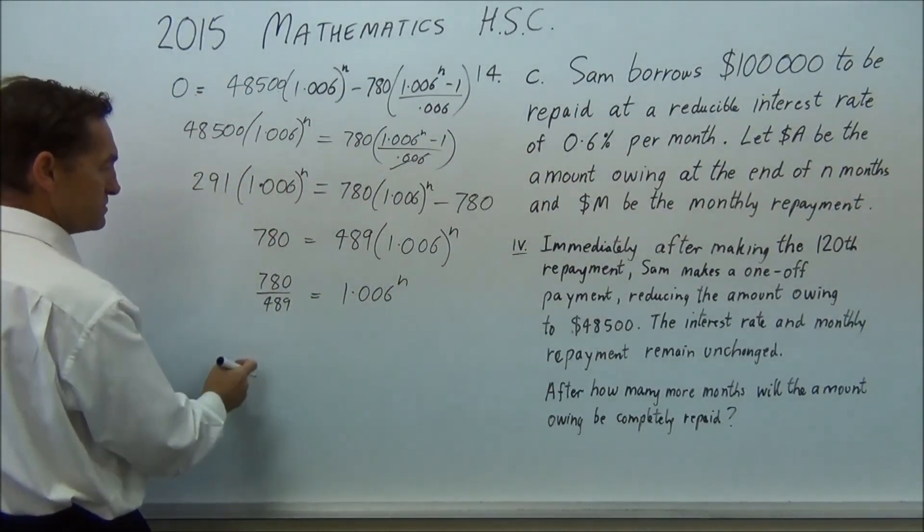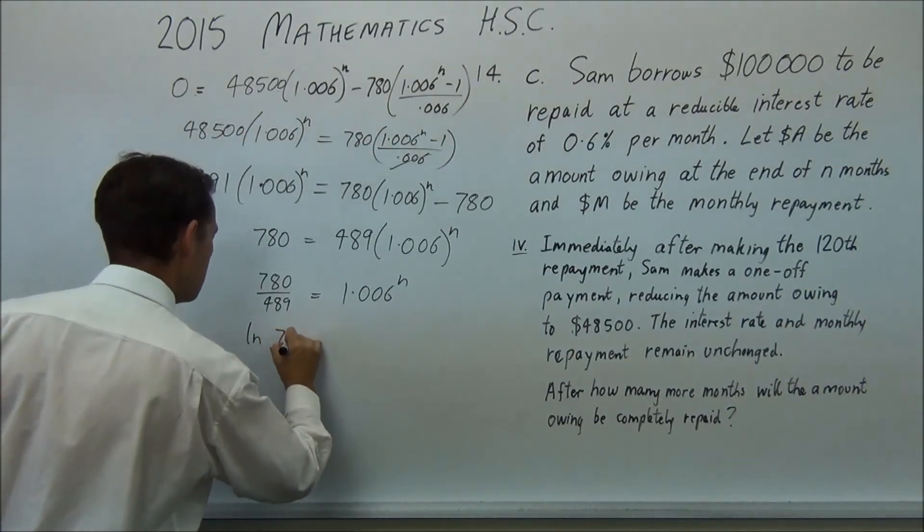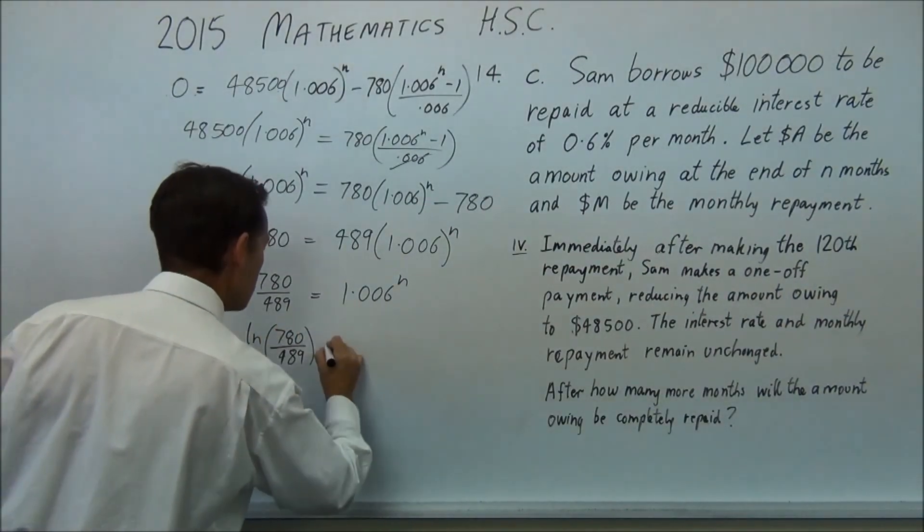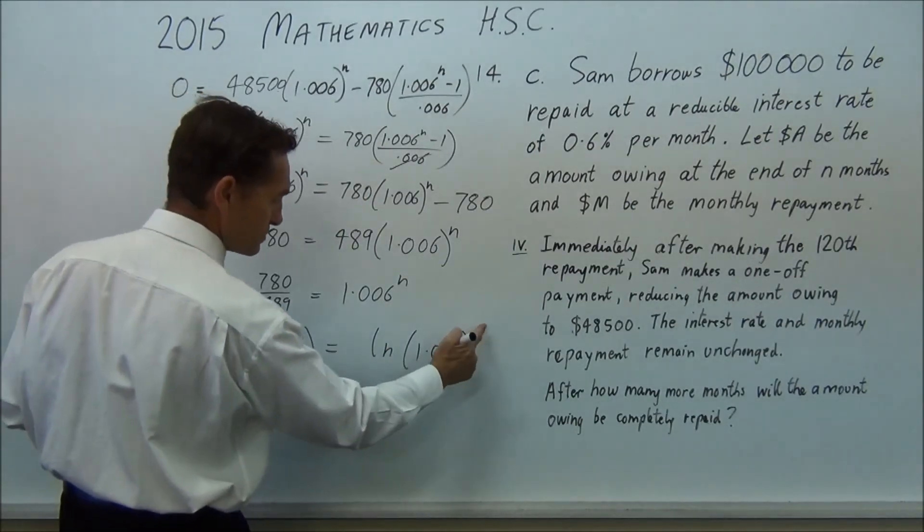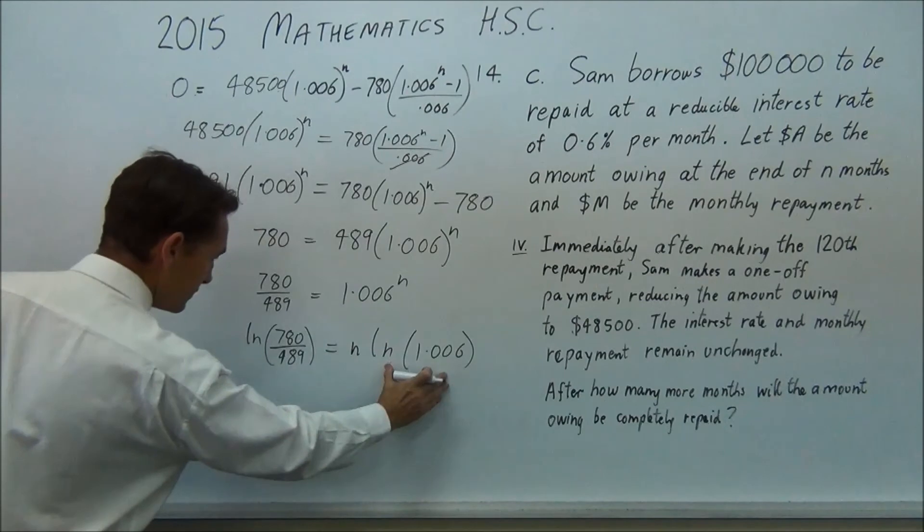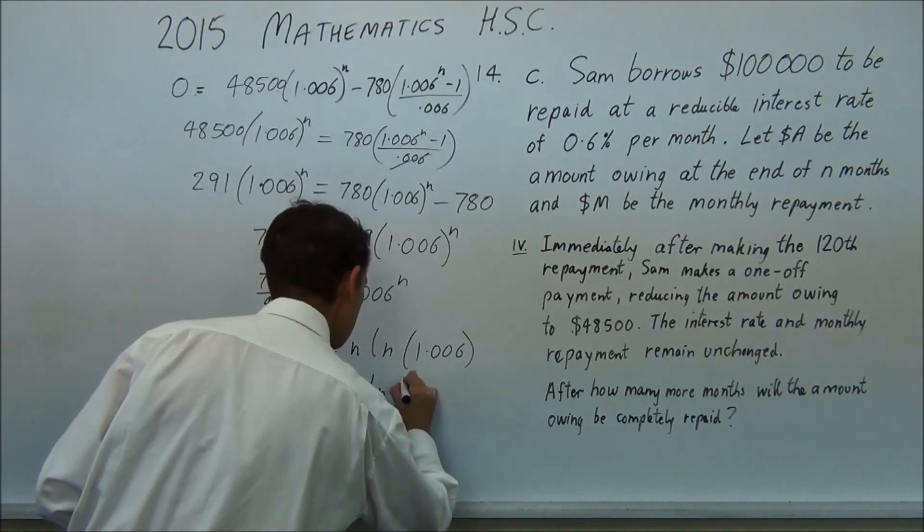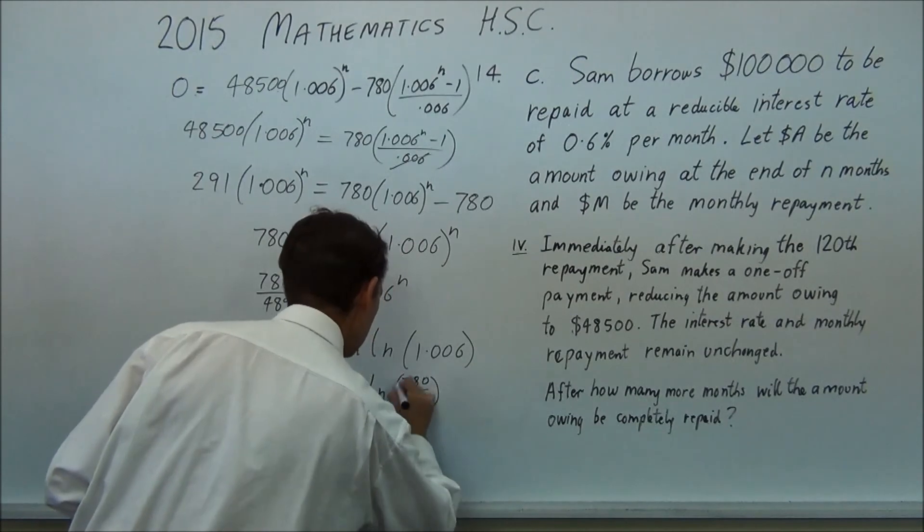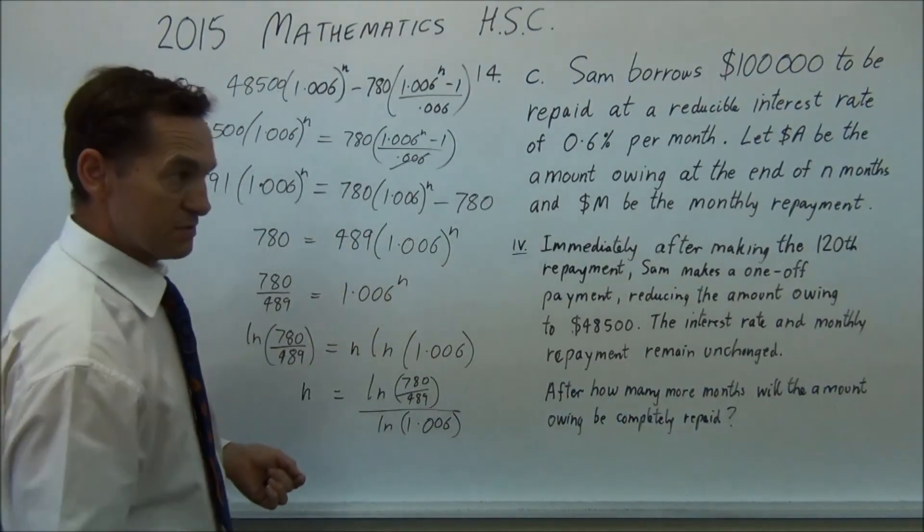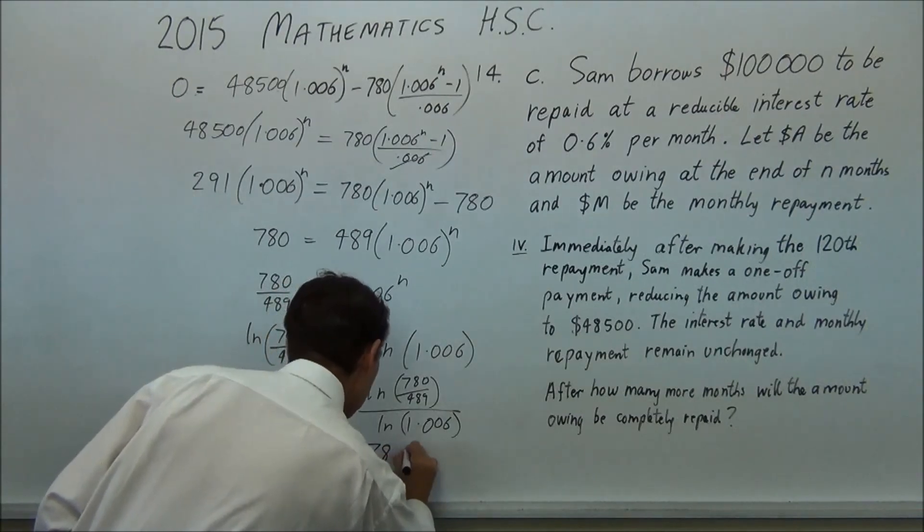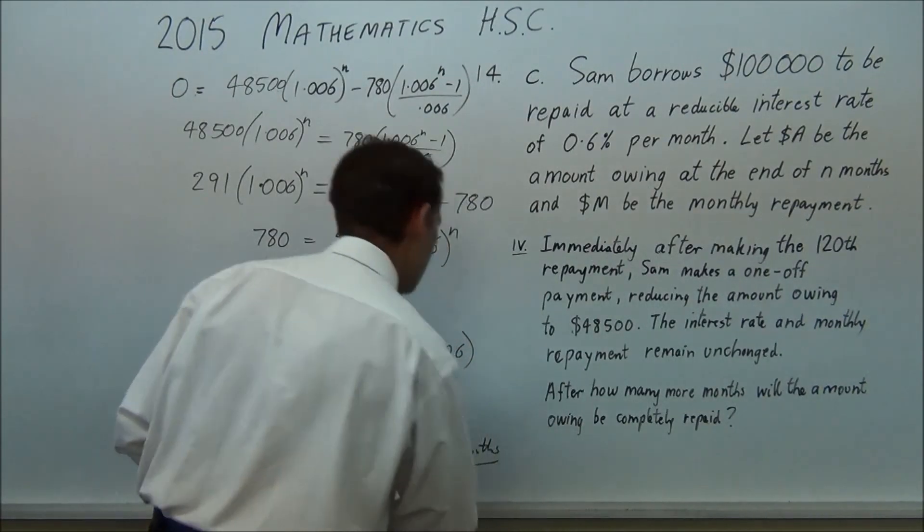Now you're going to use your logs. So take logs of both sides and divide by that. So once you take log of here, the n will come in front. So log of 780 over 489 equals log of 1.006 to the power of n. Now you know in your log rules that power is going to go in front. And therefore you're going to divide this on this side. So our n will equal this log divided by that log. So log 780 over 489 divided by log 1.006. I've actually done that in the calculator before and you should get 78.005 months. And you're done.